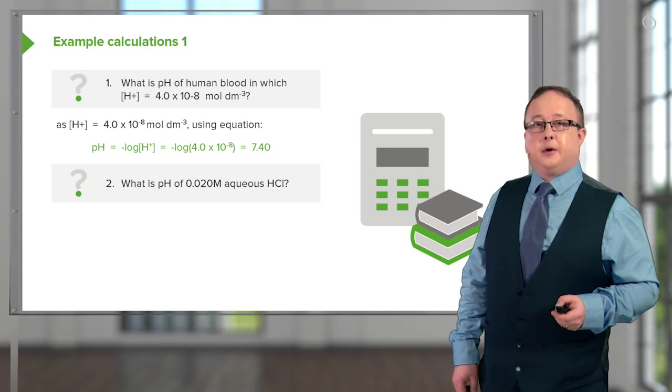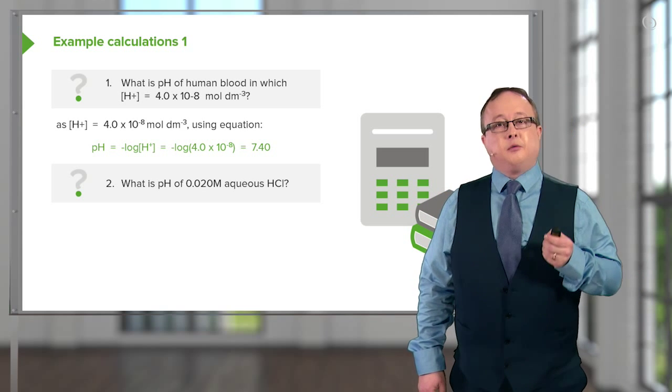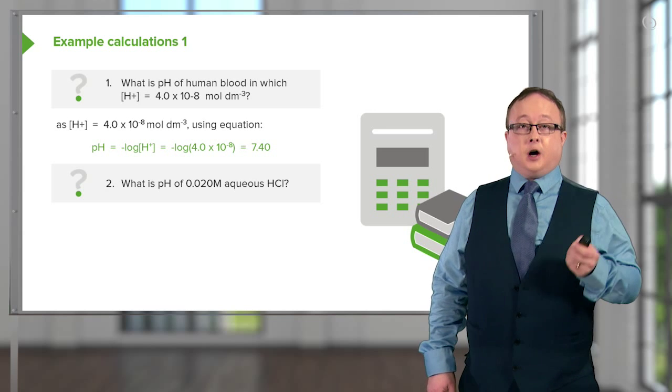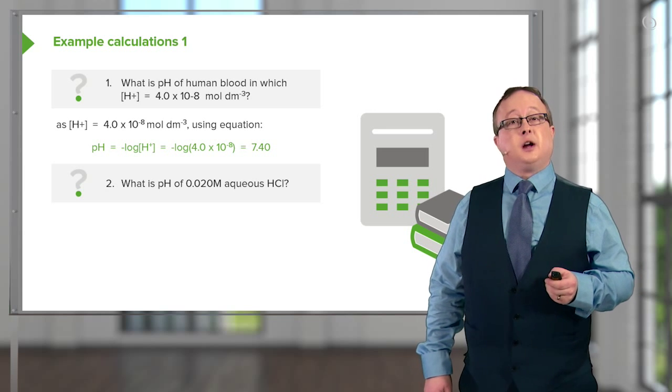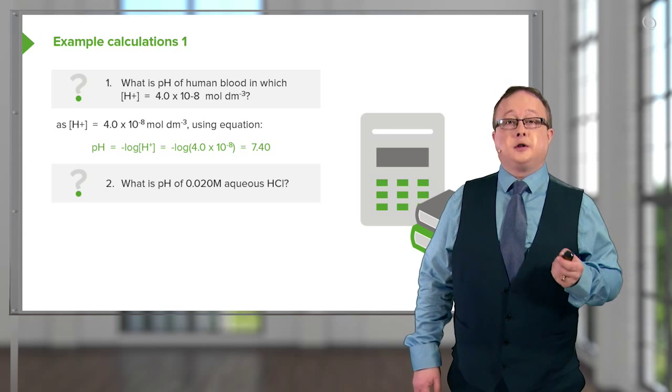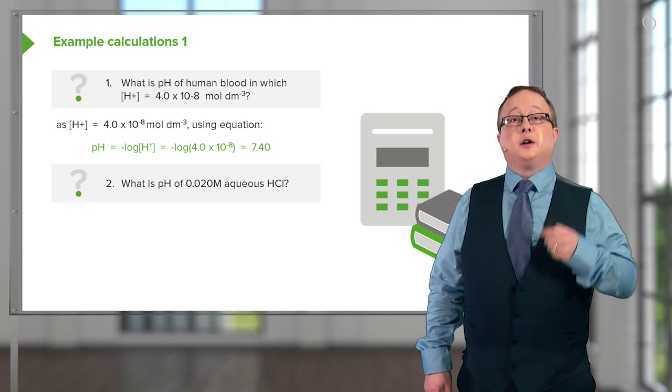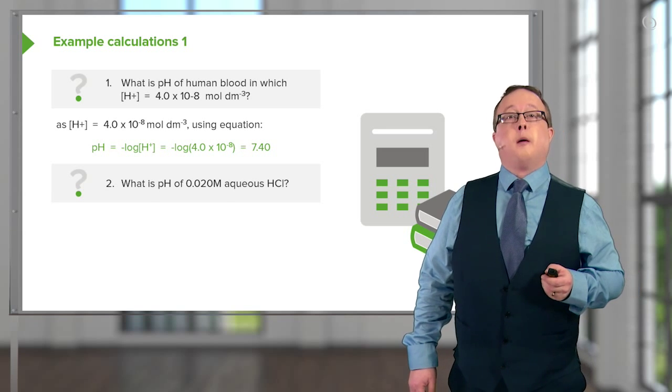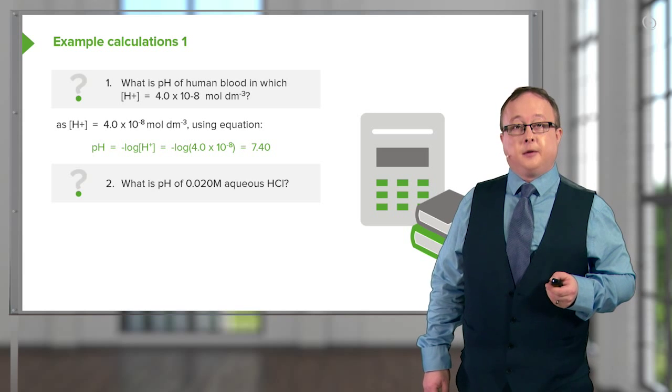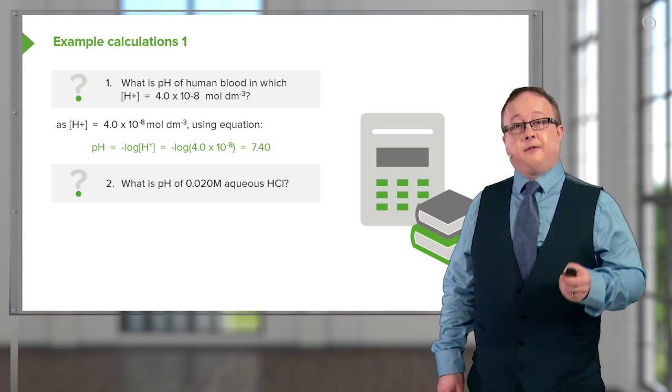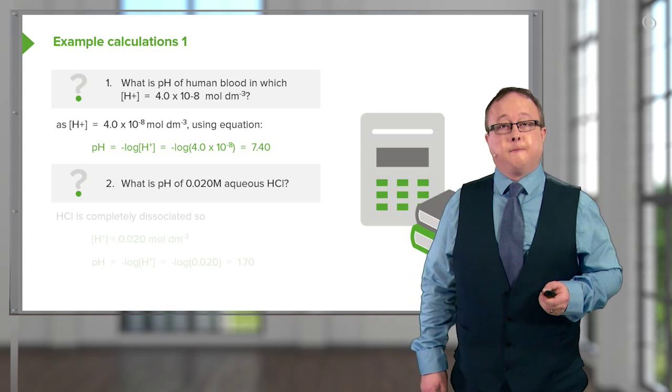Let's have a look at the second question. Let's see what would happen if we used a strong acid, hydrochloric acid, and we dissolved it up to make a solution of 0.02 molar, which is, as I said before, 0.02 moles per decimeter cubed. The concentration is given for us here as 0.020.